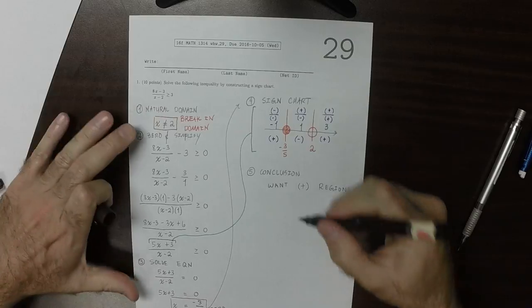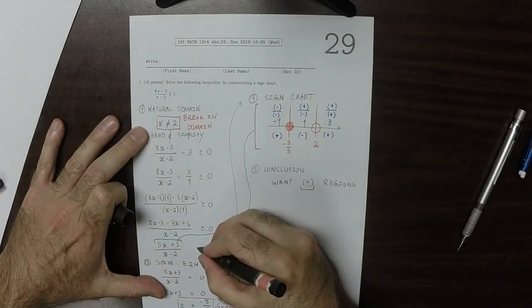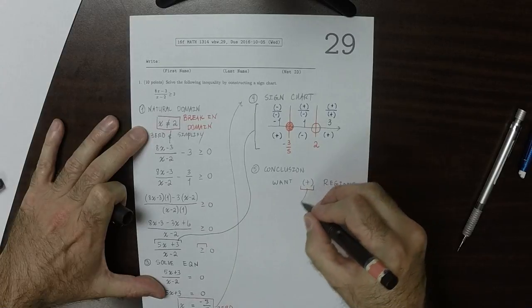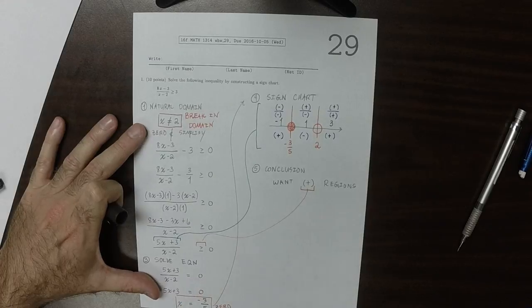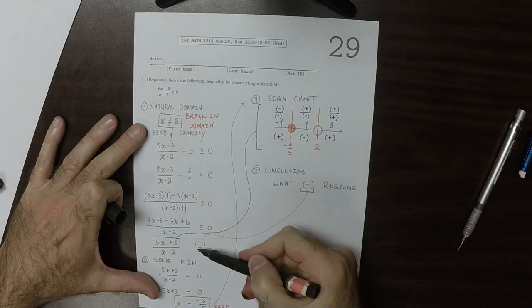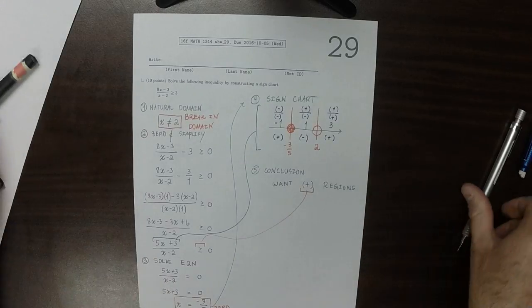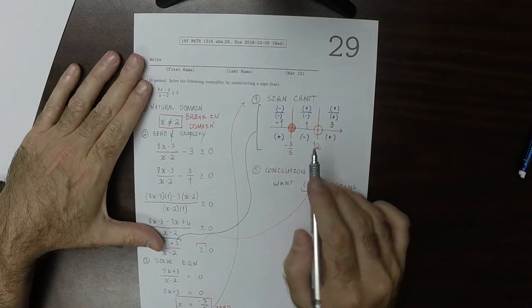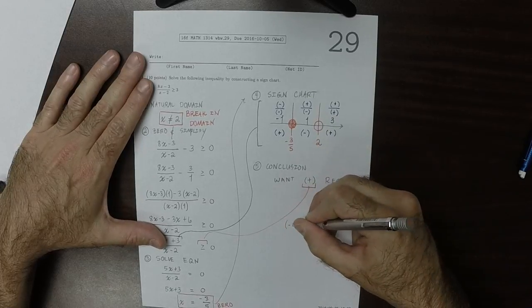The reason why we want the positive regions is because of this. We were interested in finding where this expression was greater or equal to 0. If this said less or equal to 0, we would want the negative regions. So now we look at the positive regions and say, okay, that's the answer.